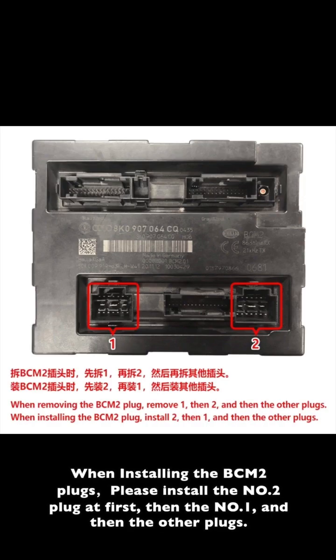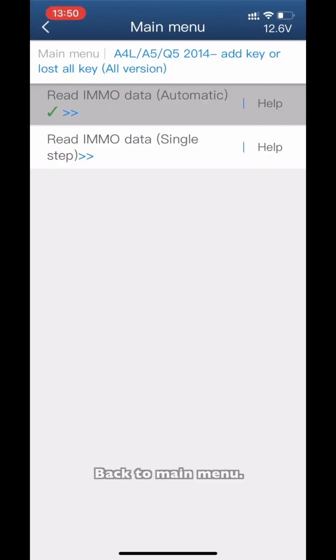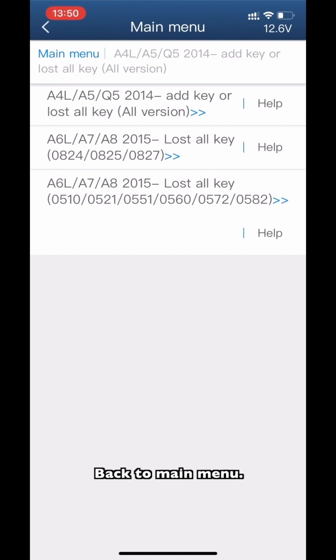Please restore the B-SIM 2 module and check if the vehicle status is normal. When installing the B-SIM 2 planks, please install the number 2 plank end first, then number 1, and then the other planks. Back to the main menu.